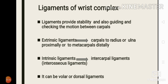Next we are moving to the ligaments of the wrist complex. Ligaments provide stability and also guide and check unnecessary motion between carpals. There are mainly two types of ligaments: extrinsic ligaments and intrinsic ligaments. Extrinsic ligaments connect carpals to outside structures — for example, ligaments connecting carpals to the radius or ulna proximally, or ligaments connecting carpals to metacarpals distally. Intrinsic ligaments are intercarpal ligaments connecting the carpals to each other, also known as interosseous ligaments. Ligaments can be volar (placed anteriorly) or dorsal (placed posteriorly).